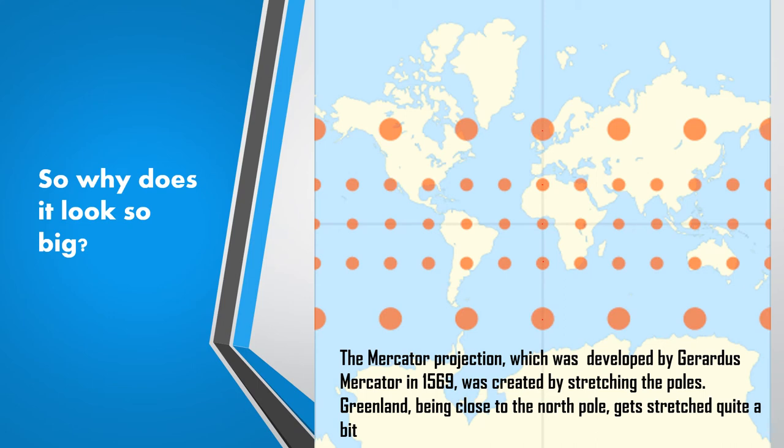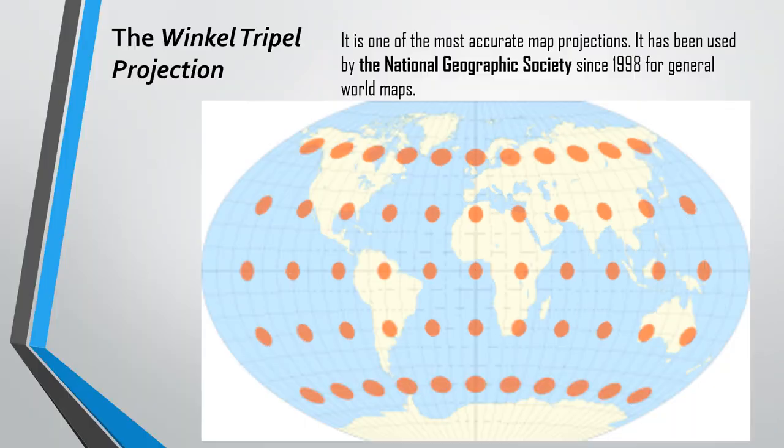Is there any alternative? There is the Winkel Tripel projection, which is a much more accurate projection — one of the most accurate map projections available. It has been used by the National Geographic Society since 1998 for general world maps. It has less distortion, and while even this map has slight distortion, it is much better projected than the Mercator projection.